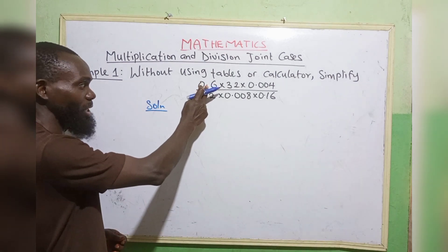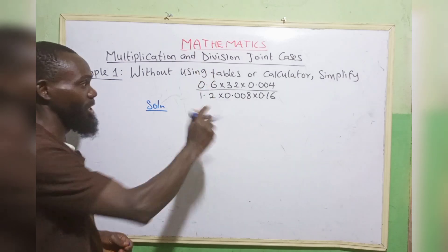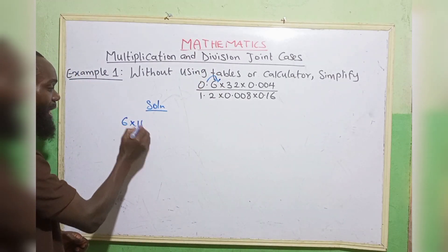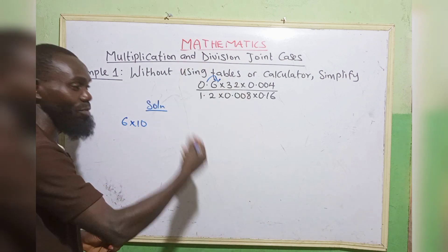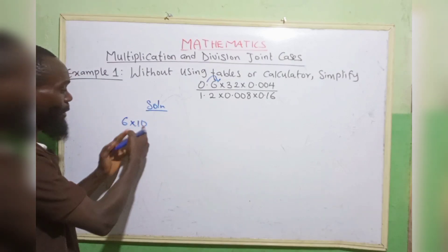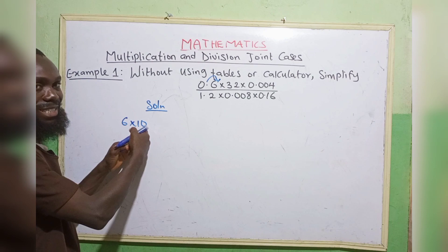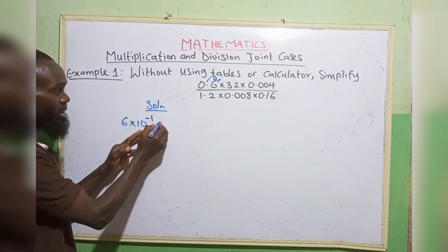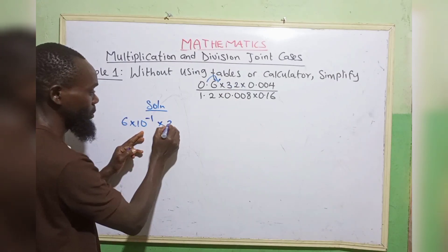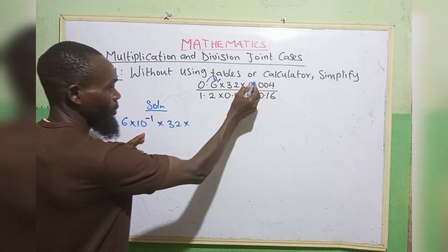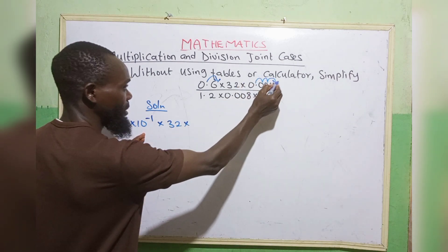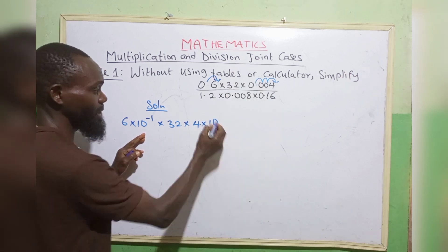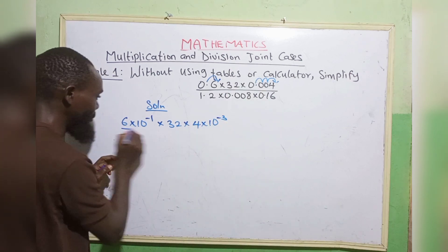We are going to move this decimal point to the back of the digits at the end. Moving this point, we have 6 multiplied by 10 to some power. We are moving backward, so the power of 10 is going to be negative, and we are moving once: minus 1. Then 32 — moving 1, 2, 3 — we have 4 times 10 to the power, moving backward 3 times, so minus 3.